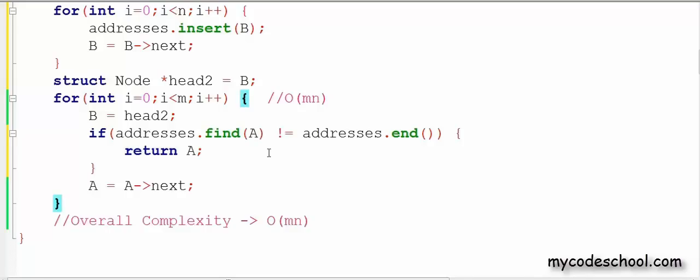Remember that we pushed all the addresses of linked list B in our set. So, if any address of linked list A is already in the set, then that has to be the merge point. Hence, we can simply return it here. I do not need these references anymore, so I can delete them.